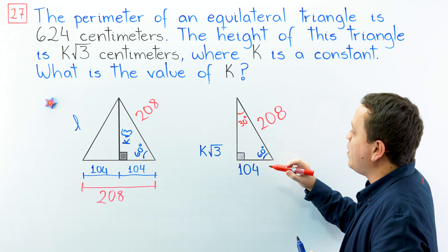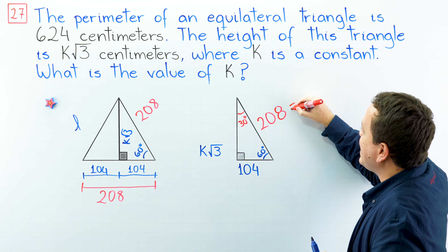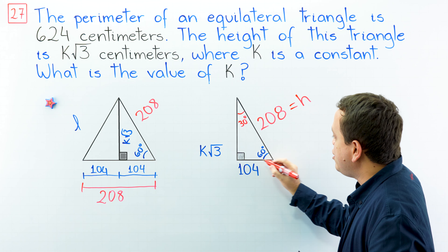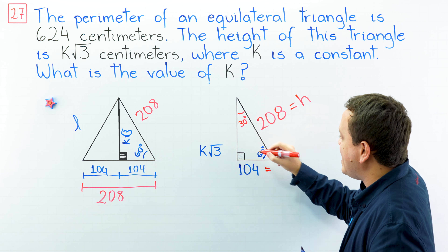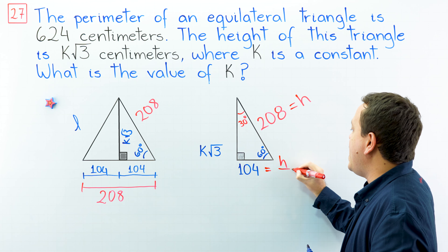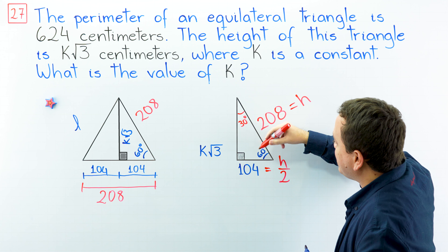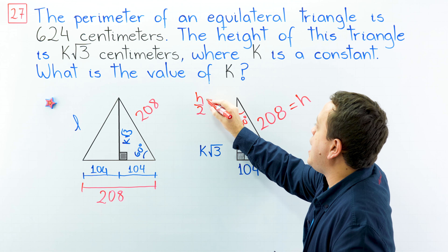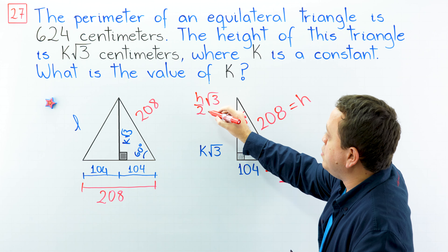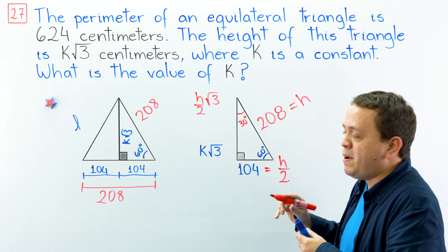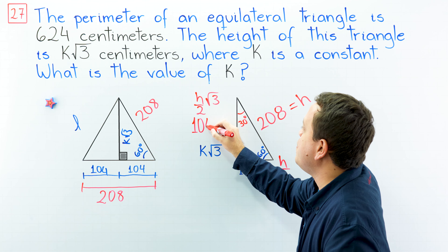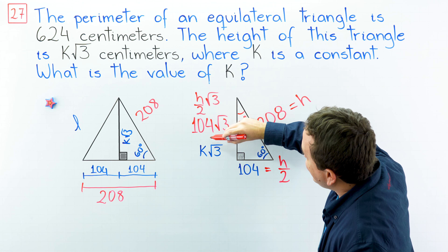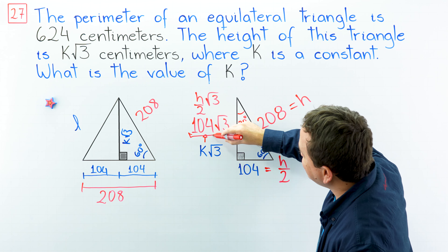In a right triangle, the side opposite to 90 degrees is the hypotenuse and is the largest side. The side opposite to 30 degrees is the shortest side, and in the 30-60-90 triangle it equals the hypotenuse divided by 2. The side opposite to 60 degrees equals the hypotenuse divided by 2 times the square root of 3. The hypotenuse divided by 2 equals 208 divided by 2, which gives us 104, and then we multiply by the square root of 3. These two quantities are equal, so the value of K is 104.